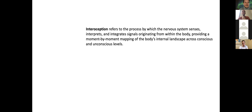By way of a definition, interoception refers to the process by which the nervous system senses, interprets, and integrates signals originating from within the body, providing a moment-by-moment mapping of the body's internal landscape across conscious and unconscious levels. I'd like to point out a few things here: we're talking about the nervous system — the brain, spinal cord, and peripheral nervous system — as well as this mapping across conscious and unconscious levels.